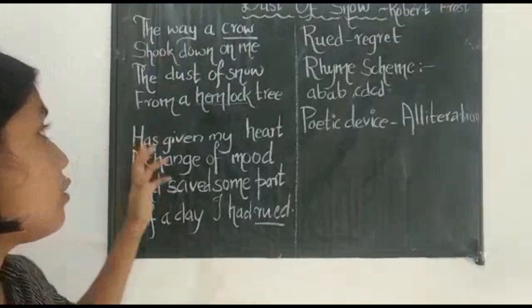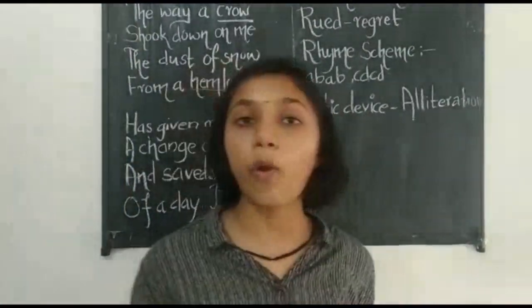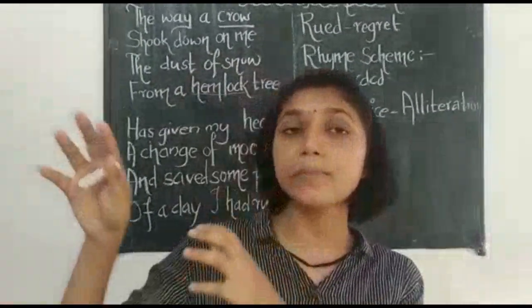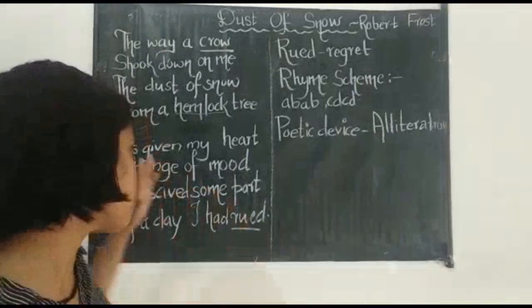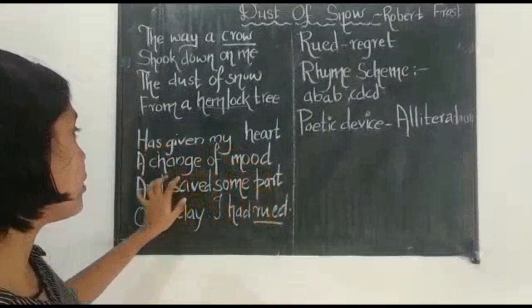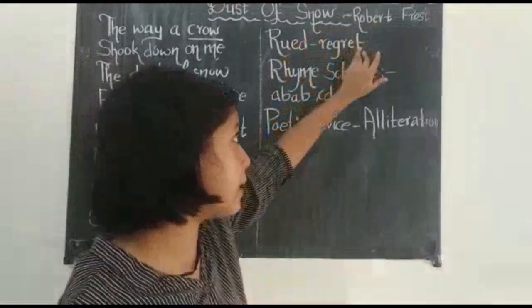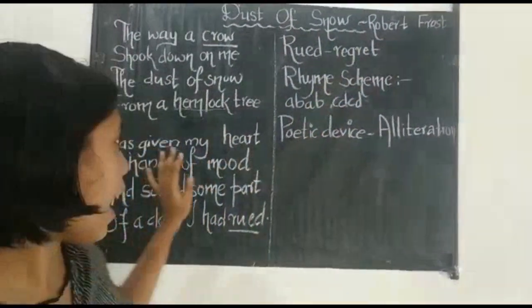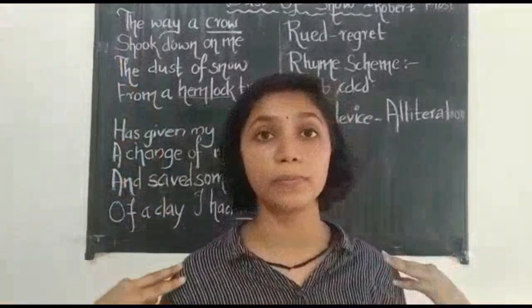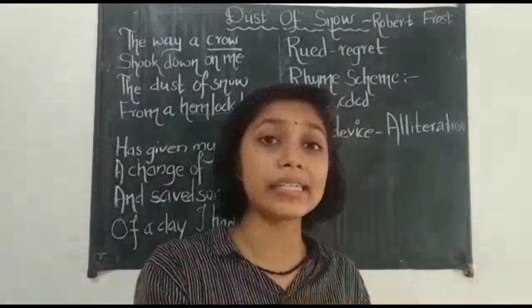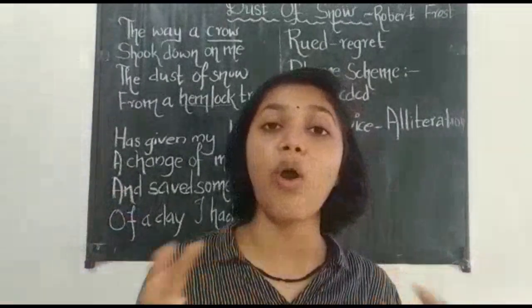So a crow was sitting on top of a hemlock tree and the poet was standing near to it. By the movement of the crow, the snowflakes fell on the body of the poet. Now the second stanza: 'Has given my heart a change of mood and saved some part of a day I had rued.' Rued means regret or sadness. So as soon as the snowflakes fell on the body of the poet, the poet's mood changed from sadness to happiness. And the crow, which was considered as a bad omen, made all the difference.